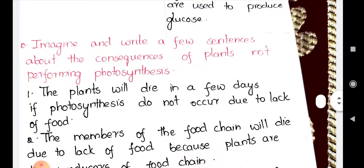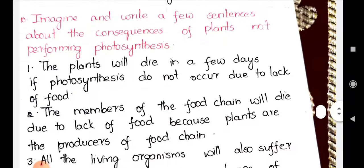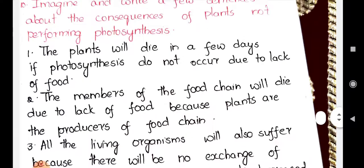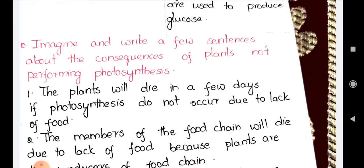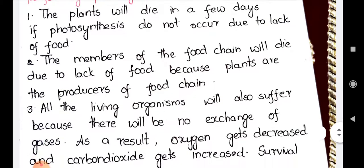The next question: 'Imagine and write a few sentences about the consequences of plants not performing photosynthesis.' First point: plants will die in a few days if photosynthesis does not occur, due to lack of food. Second point: members of the food chain will die due to lack of food, because plants are the producers in the food chain — which is the passage of energy from one level to the next.